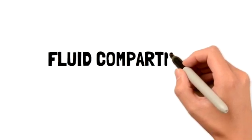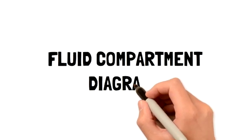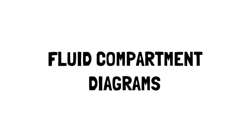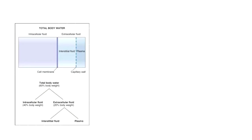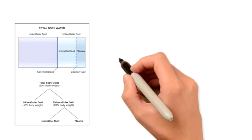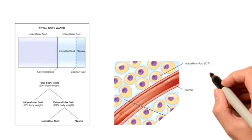Hey guys, today we'll be talking about fluid compartment diagrams. Before we get started, I want to first quickly go over the total body water. Total body water makes up 60% of body weight, and then that 60% of weight can be further divided into two-thirds intracellular fluid and one-third extracellular fluid.